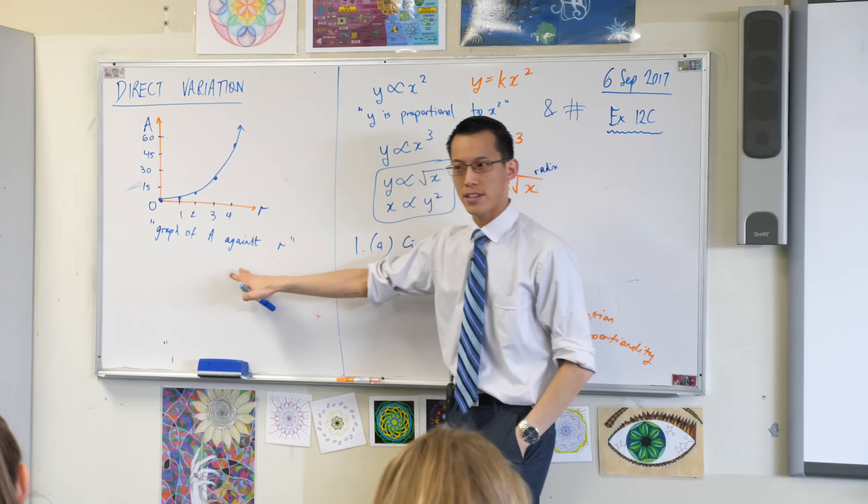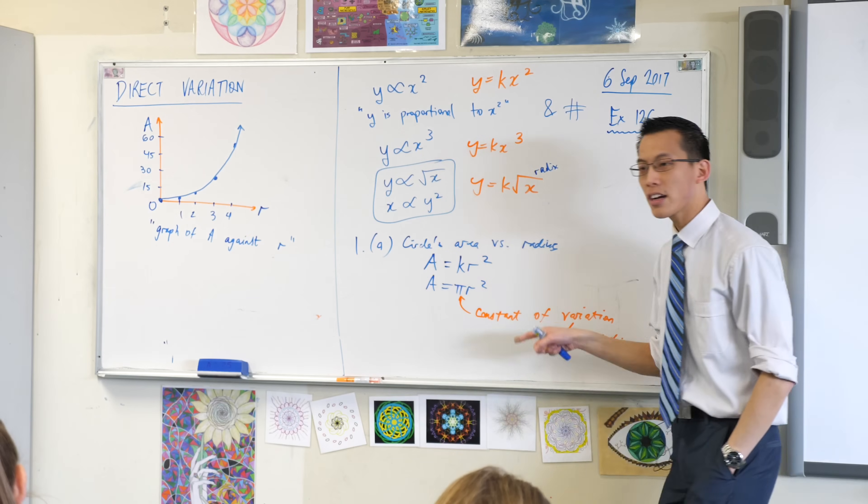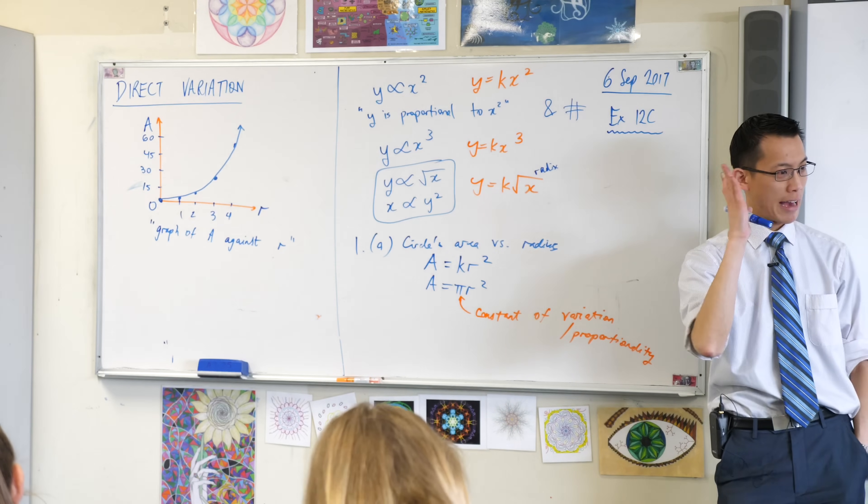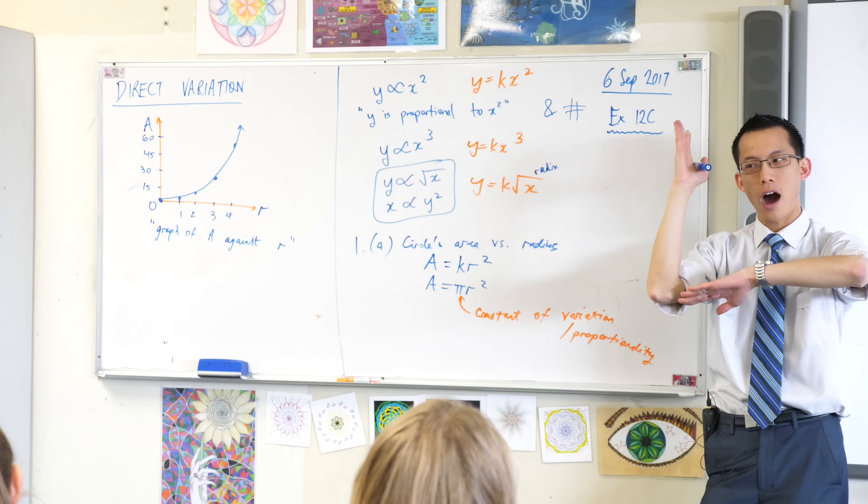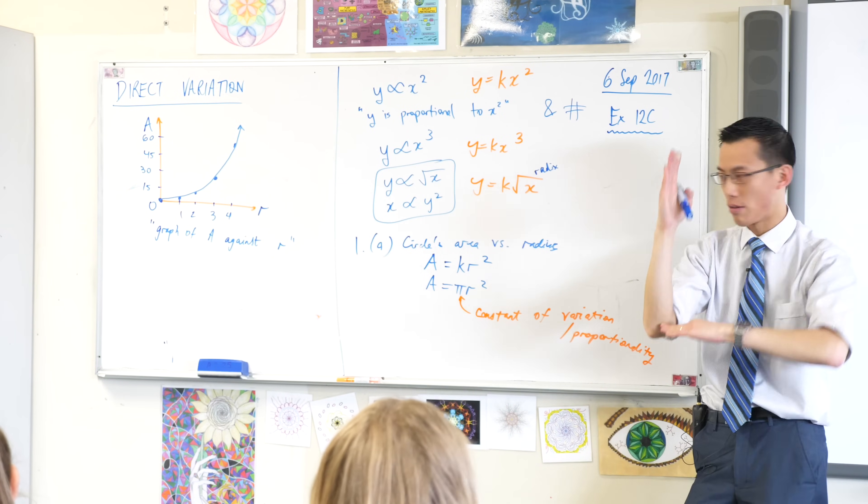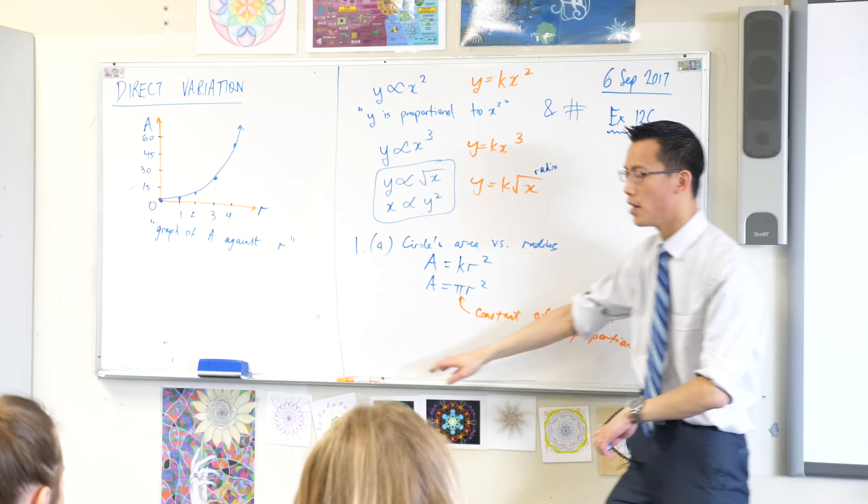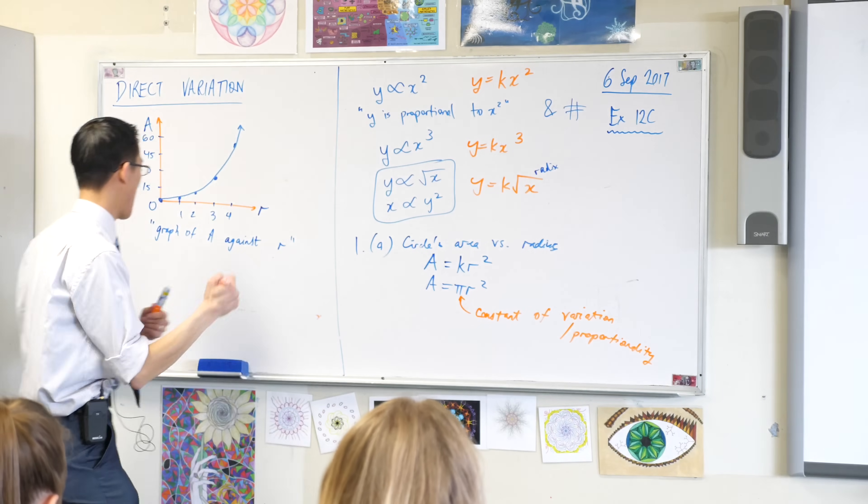But this is not the only way to graph this. I can graph this with a on the vertical axis and r squared on the horizontal axis. So draw for me underneath here, draw for me another set of axes. It can be identical in size.